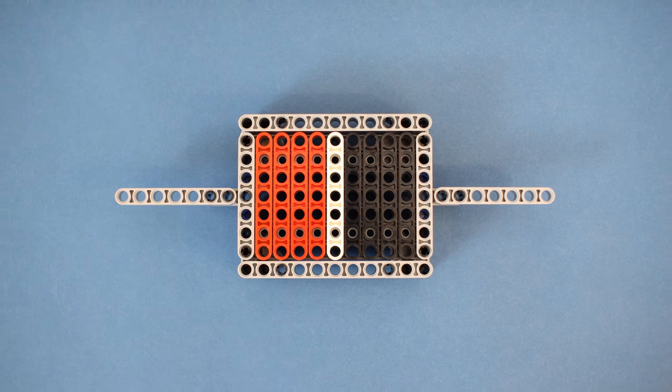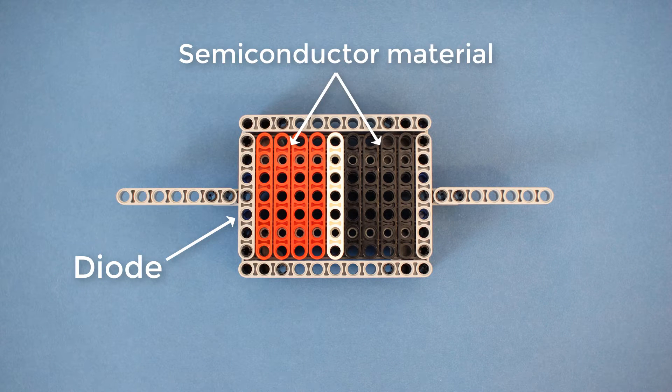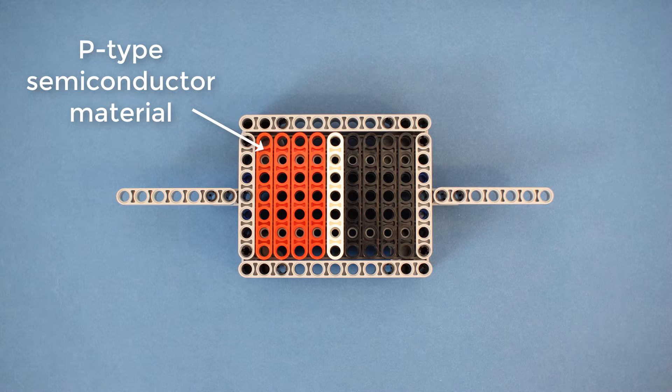Modern semiconductor temperature sensors, like the one found on your micro:bit, operate on a slightly different principle. Much like an LED, a diode is made up of two types of semiconductor material. One side is made up of P-type semiconductor material, which allows positive charges to move around more freely than negative charges.